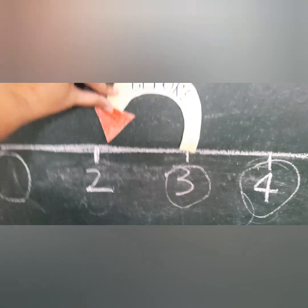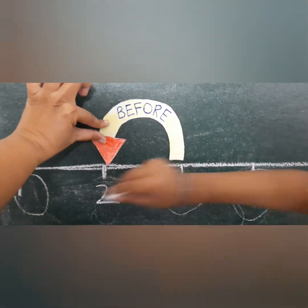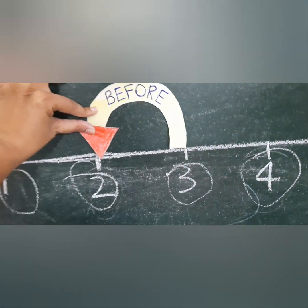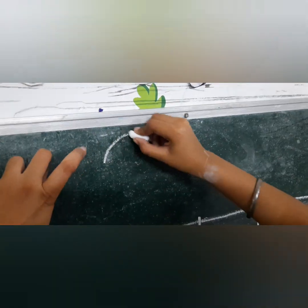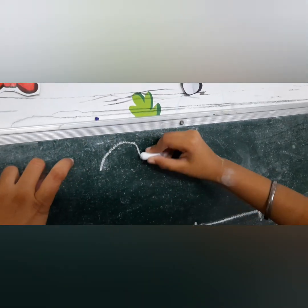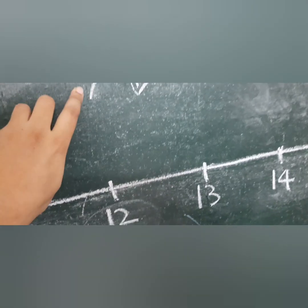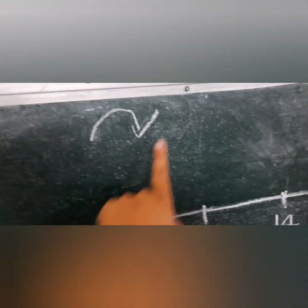What will come before three? Two — very good. Draw an after arrow here. Very good, good job. So now this is the after arrow.